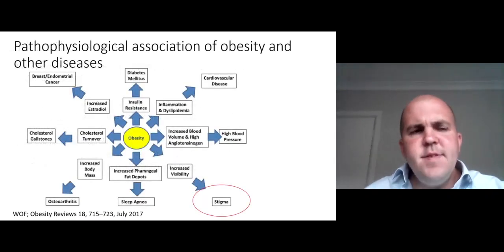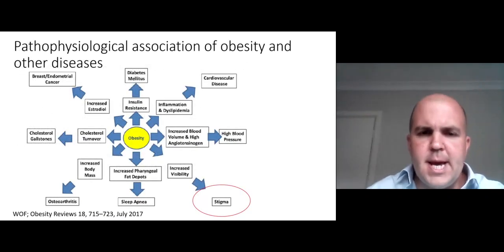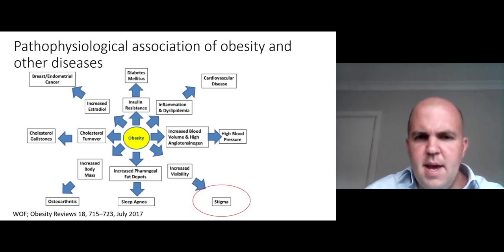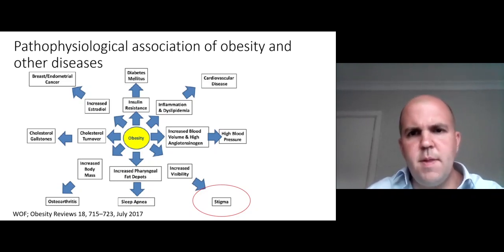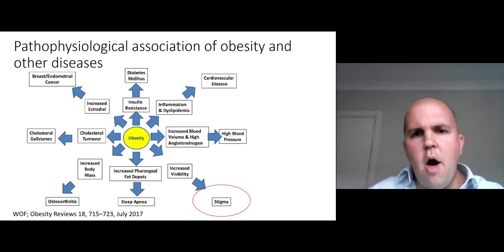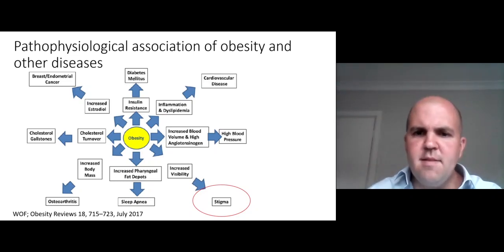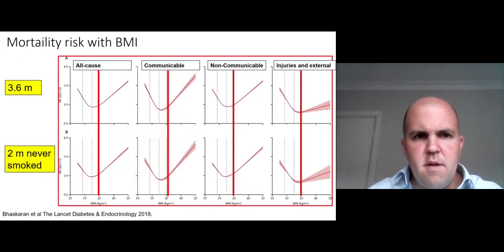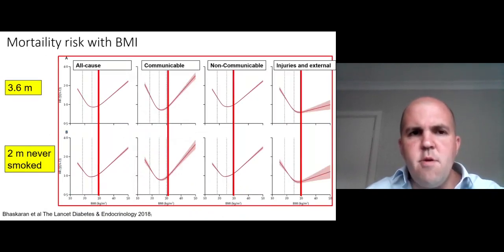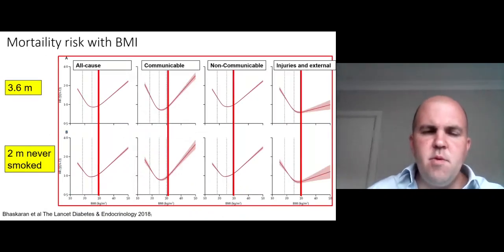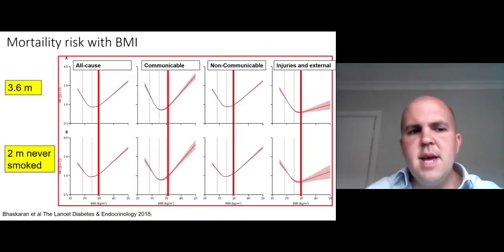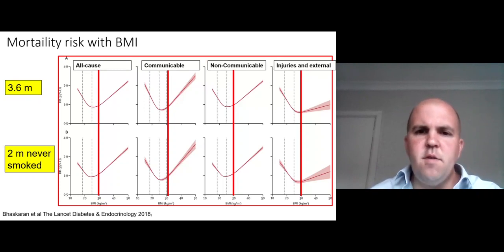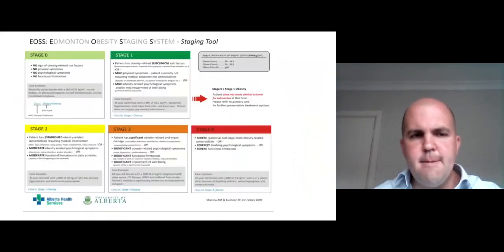In terms of the consequences of obesity — whilst I want you to think of obesity as a disease in its own right — it is associated with a number of other diseases as well, for example type 2 diabetes and cardiovascular disease. There is an association between body mass index and mortality across a number of causes, as demonstrated by this quite large study.